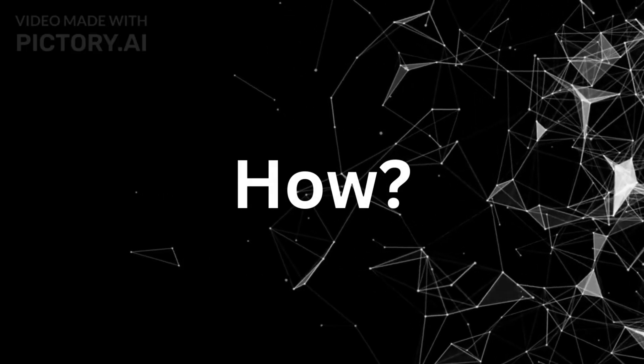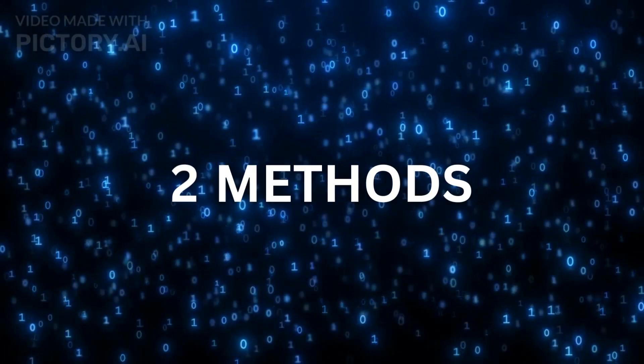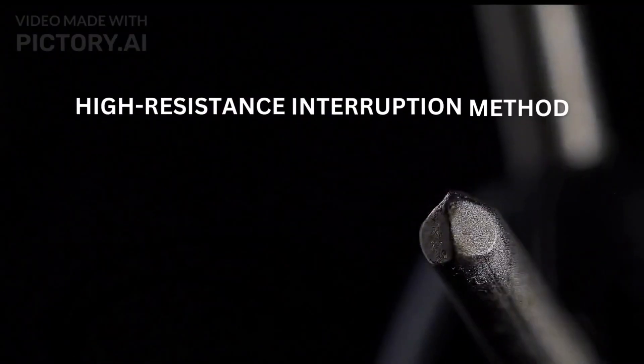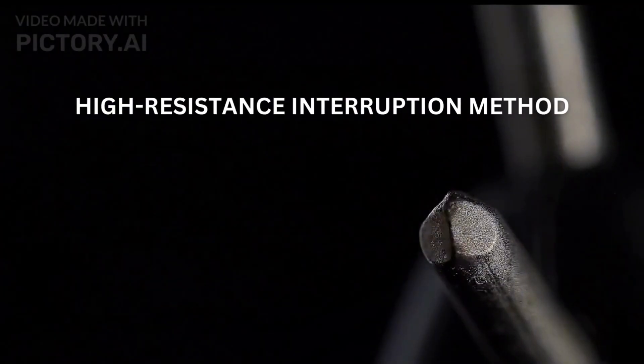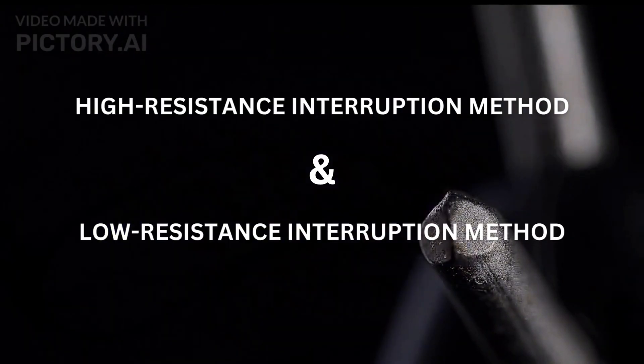This is where circuit breakers come to the rescue, opening the contacts and effectively extinguishing the arc. There are two methods of arc interruption: the high resistance interruption method, and the low resistance or current zero interruption method.